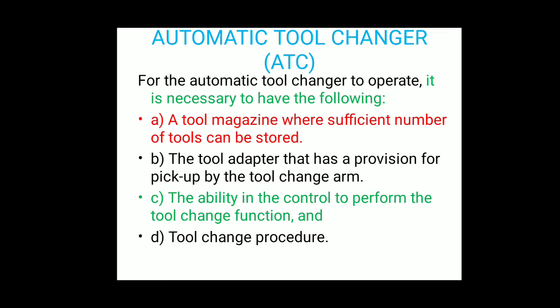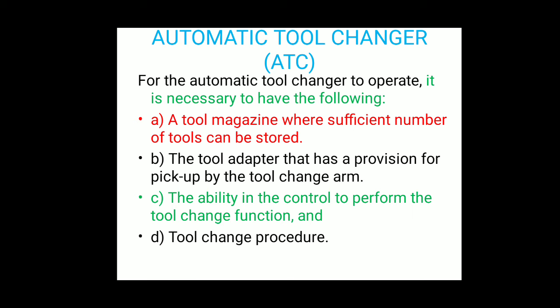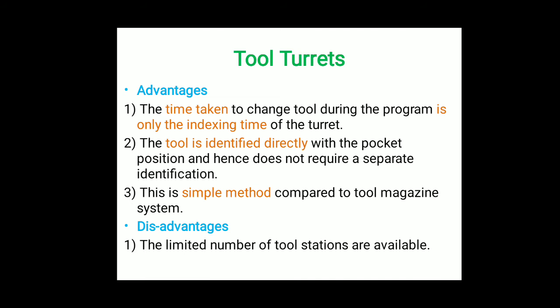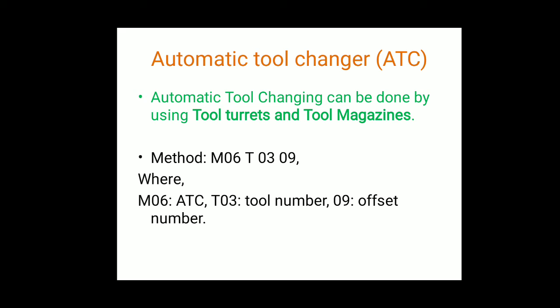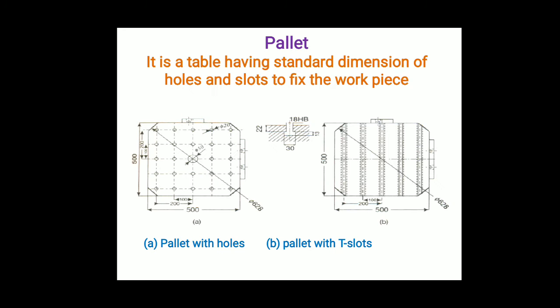For ATC, we can use both the tool turret and tool magazine systems. The basic guidelines are: the tool magazine should have sufficient tool storage, the adapter should give provision to pick up the tool change arm, the machine should have the ability to control the tool change function, and the tool change procedure such as M06 T02 should be programmed correctly.